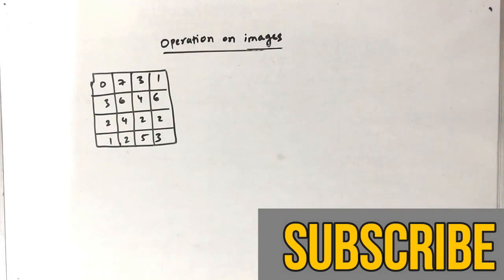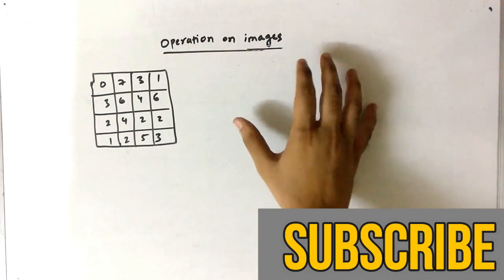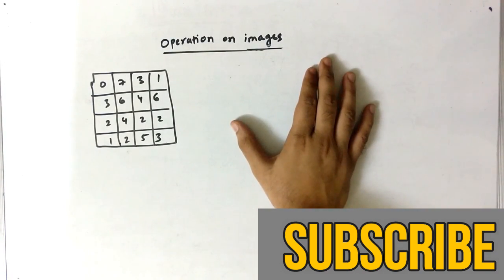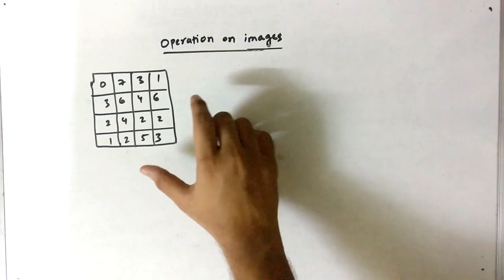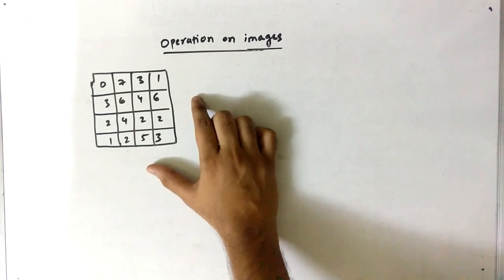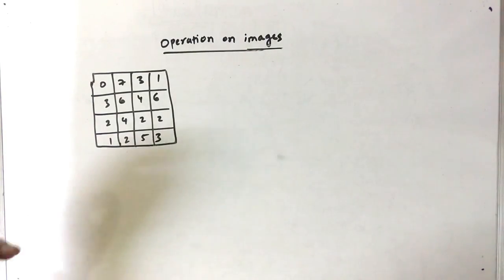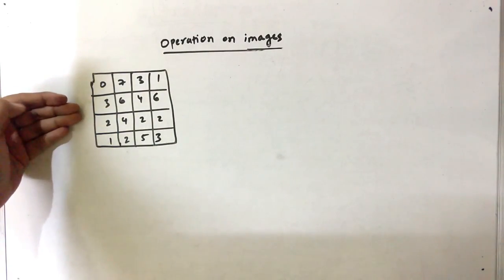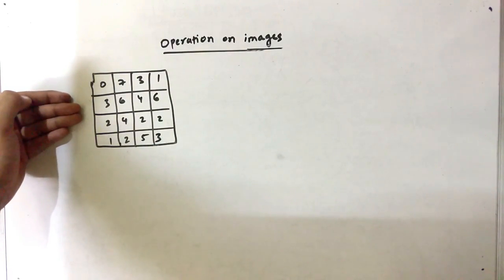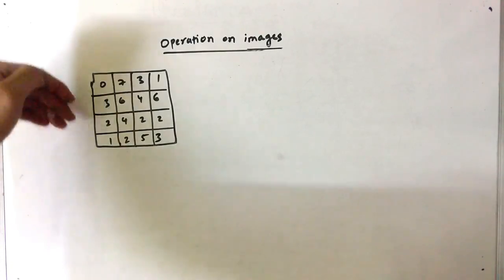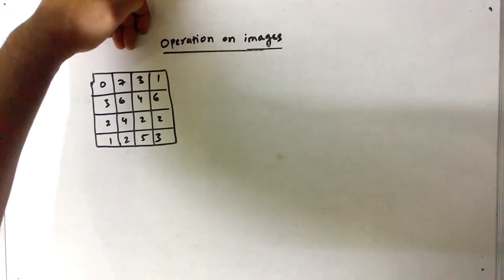Hello friends. In this video we have to perform various operations on an image. This is our given image. You can note that this is a 4x4 size image, which means that we have 4 rows and 4 columns.